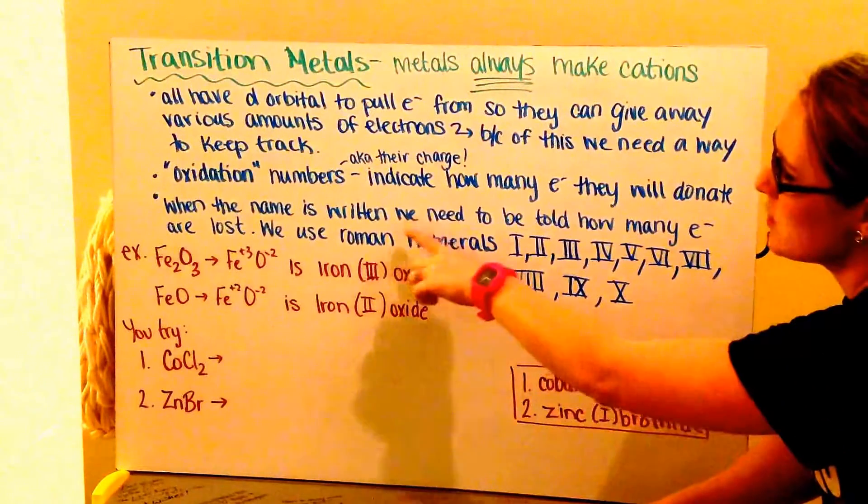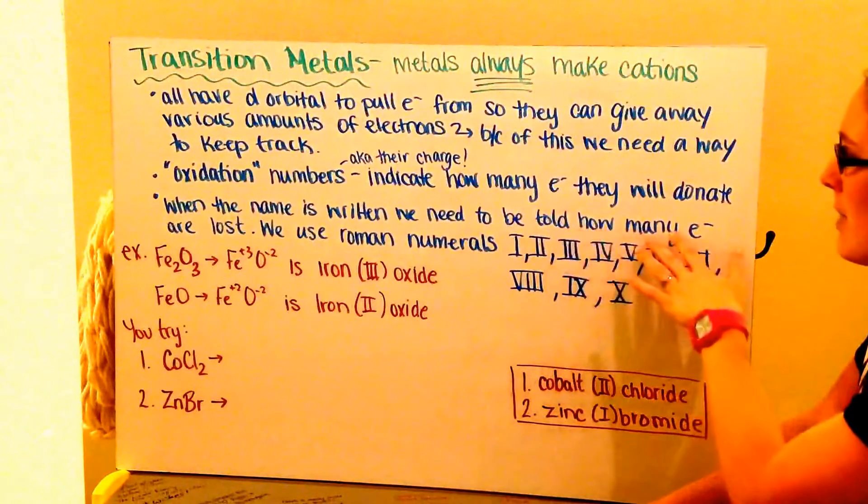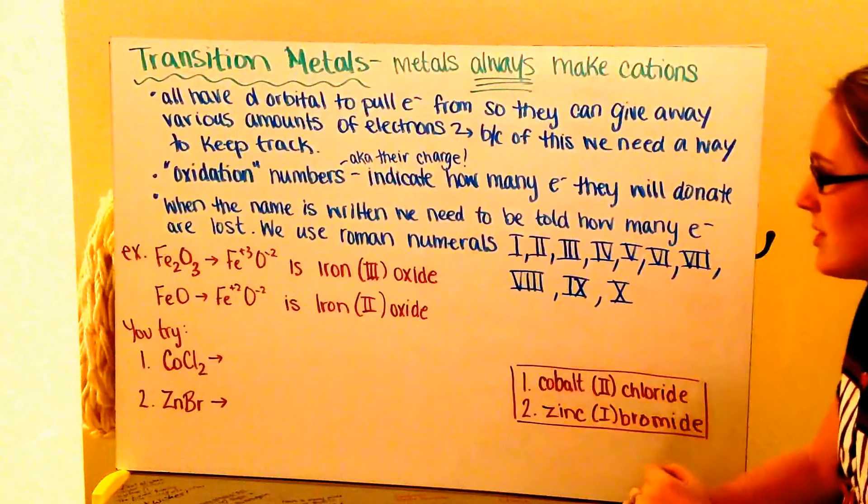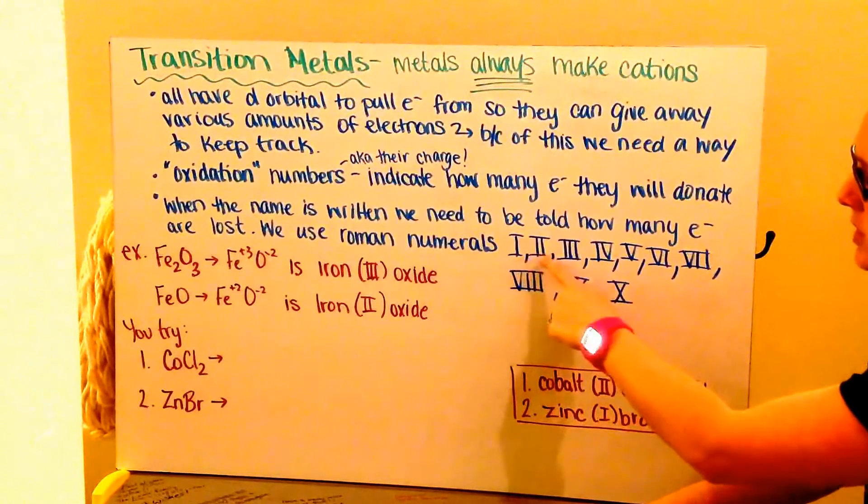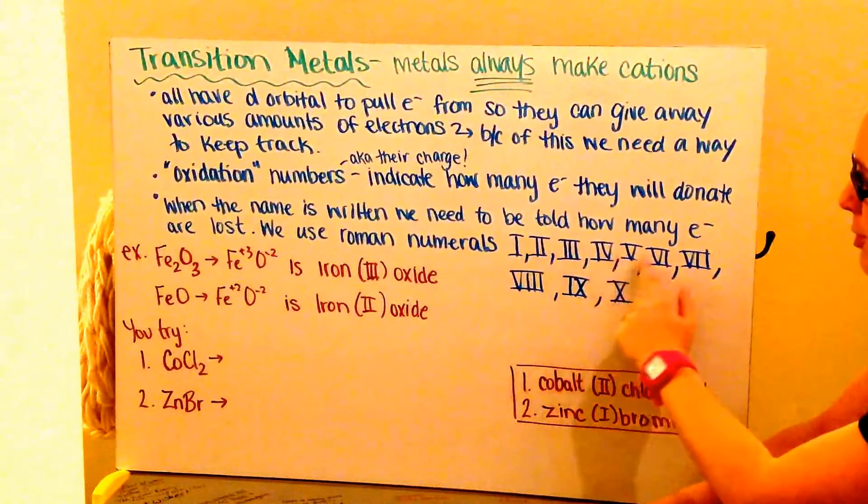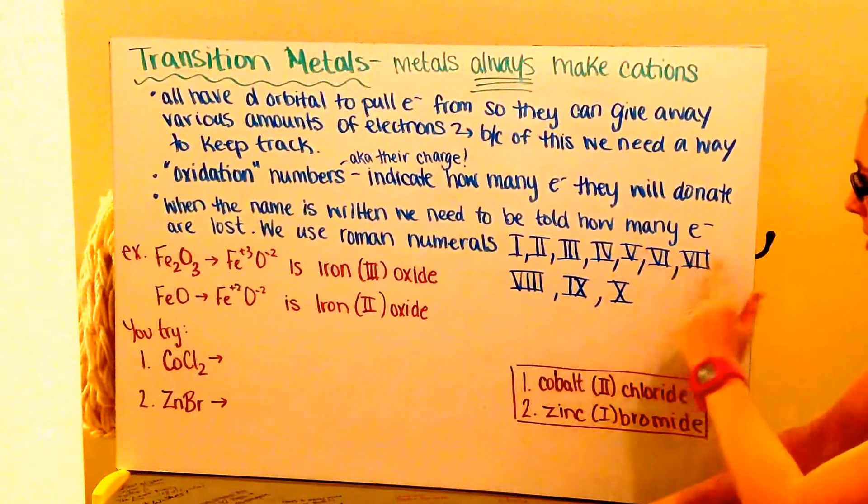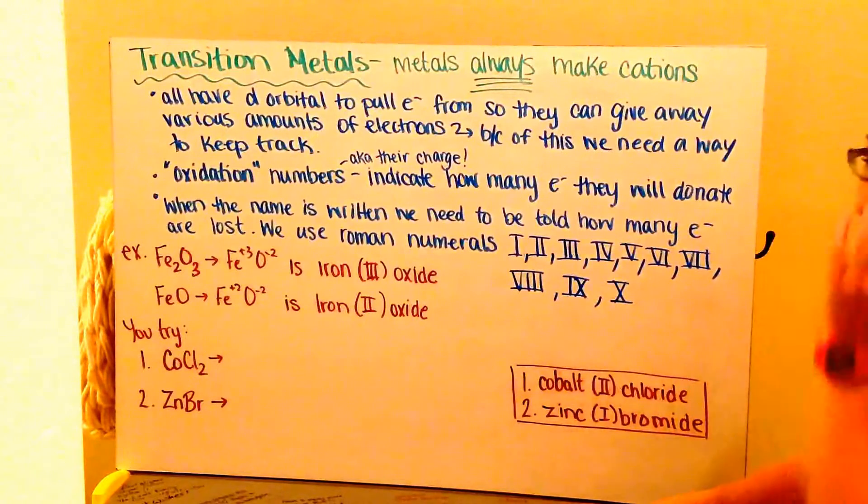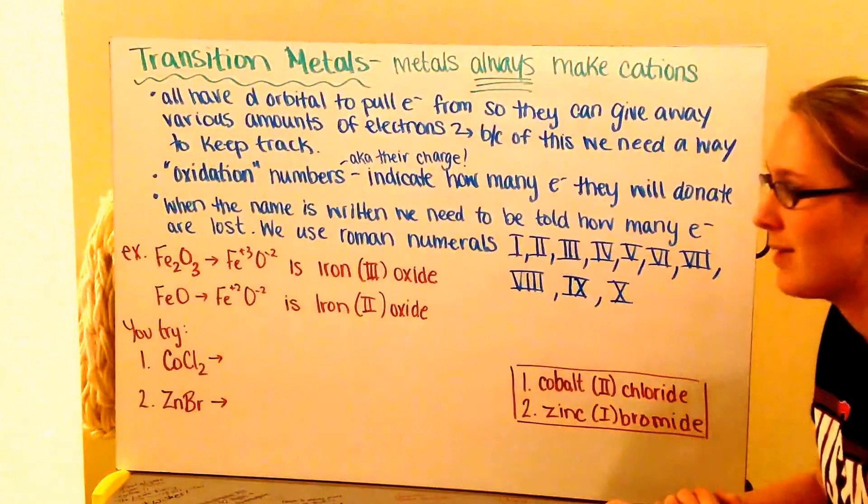So when the name is written, we have to be able to be told how many electrons are lost, and to do that we use Roman numerals. So in my Roman numerals I have I, II, III, IV, V is 5, VI, VII, VIII, IX, and X. You should be familiar with these because you'll be having to use them.